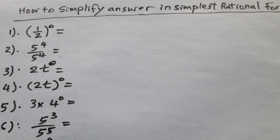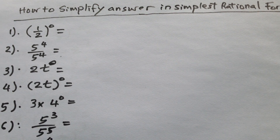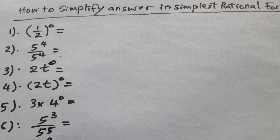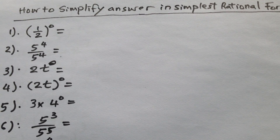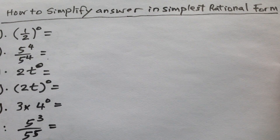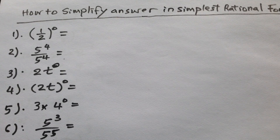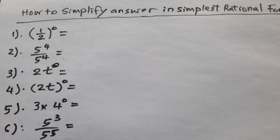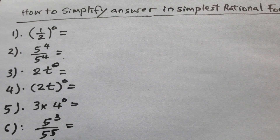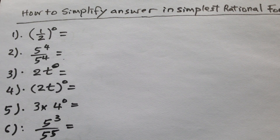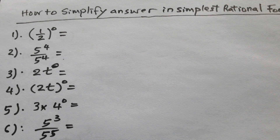We are studying how to simplify answers in simplest rational form. Here it is: 1 divided by 2 over 0, 5 divided by 5.